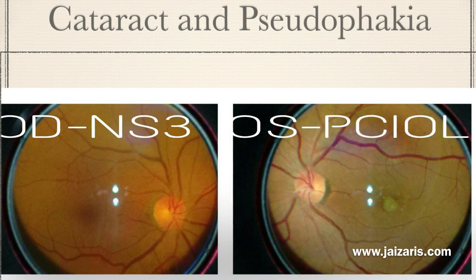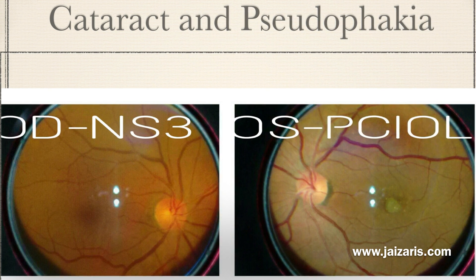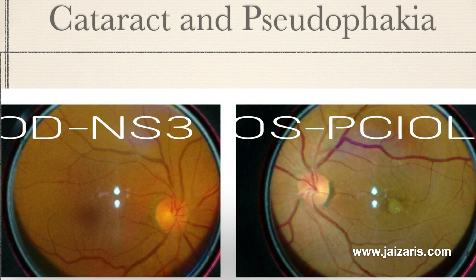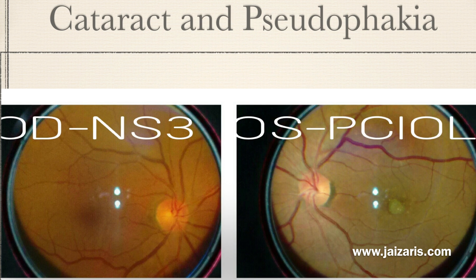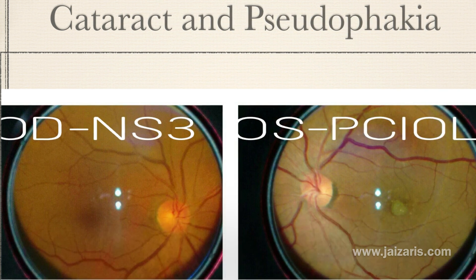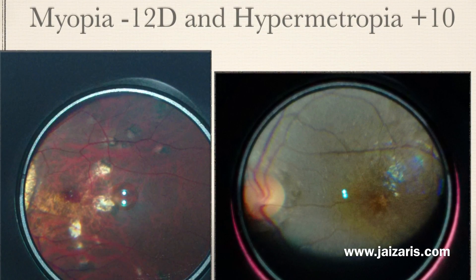Imaging is possible in dense nuclear sclerosis cataract, though with hazy retinal details. Better contrast images are obtained in pseudophakia, but there can also be difficulty in pseudophakic eyes due to reflections from the IOL or its edges. These limitations apply to any imaging device.